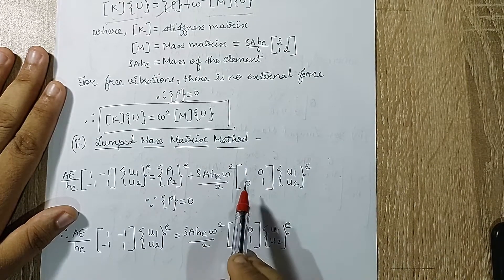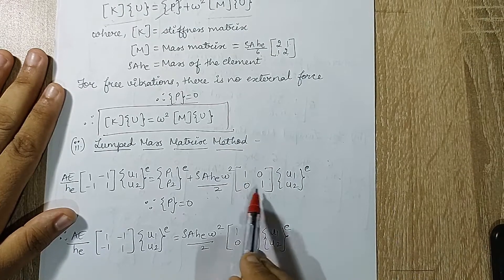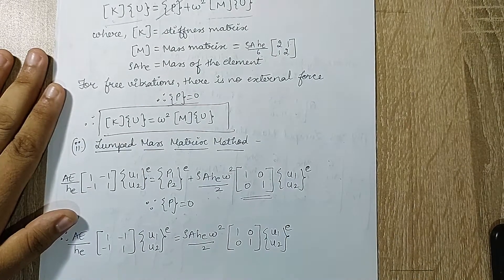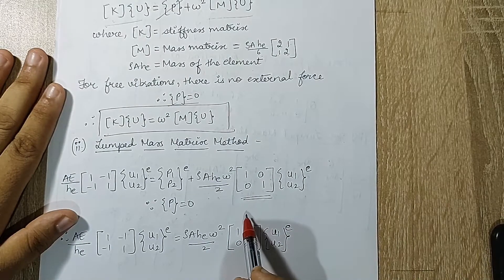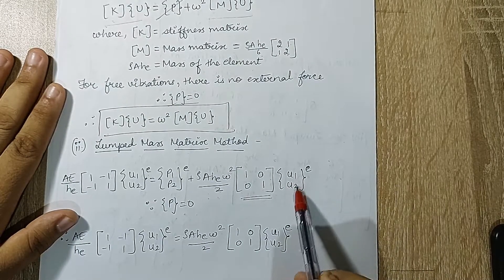Here you had [2, 1; 1, 2]. Here in this method you have [1, 0; 0, 1]. So this is the diagonal matrix that I was talking about, and using this matrix makes it very simple to solve.